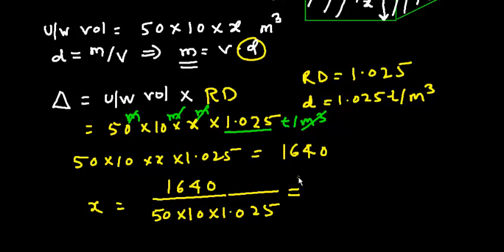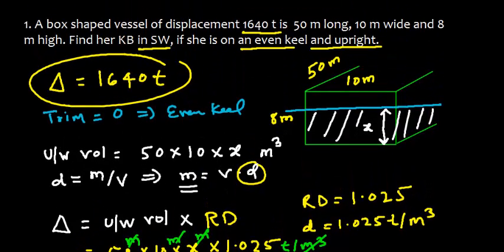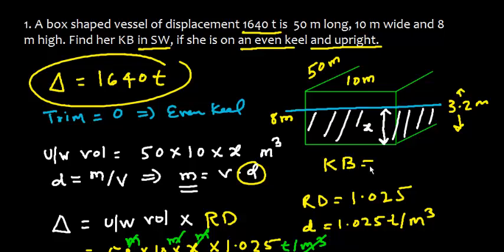Punching this into the calculator: 1640 ÷ (50 × 10 × 1.025) gives 3.2 meters. So the draft is 3.2 meters. KB is the geometrical center of the underwater volume, so KB = draft ÷ 2 = 3.2 ÷ 2 = 1.6 meters.